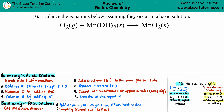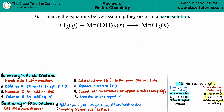Number six: balance the equations below assuming they occur in a basic solution. We have O₂ gas plus MnOH₂ solid, which yields MnO₂ solid, and we have to balance it in a basic solution. Whenever they're asking you to balance an equation in either a basic solution or an acidic solution, there are rules to follow. These equations are not just the general ones where you can get away with balancing your coefficients and be done with it.